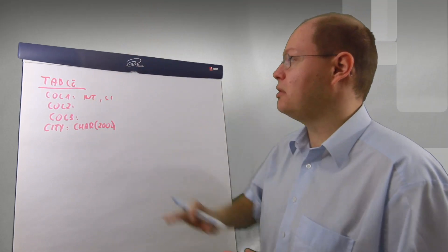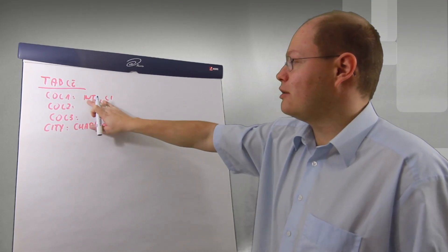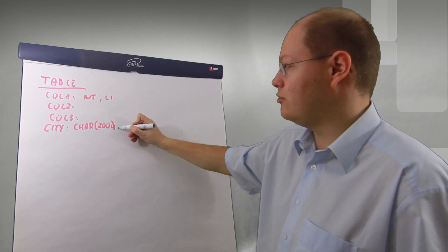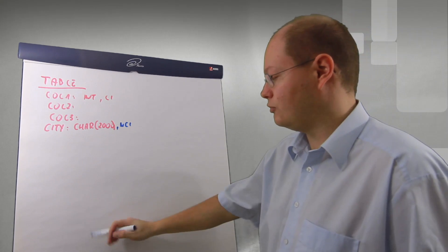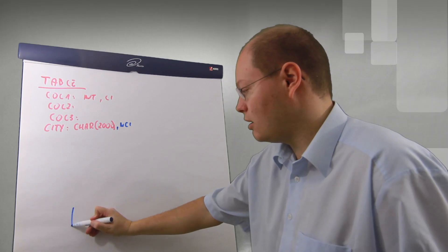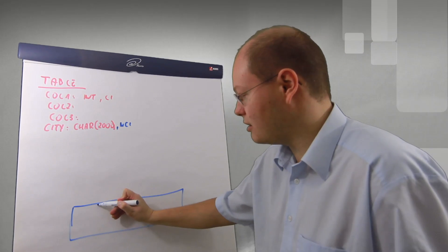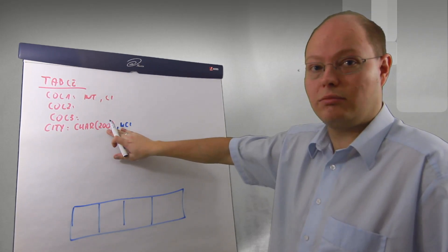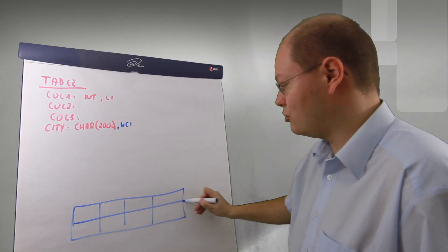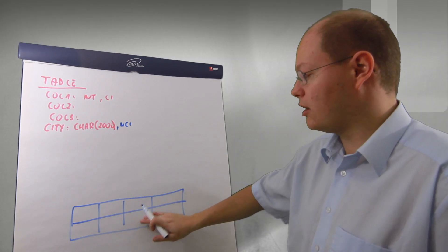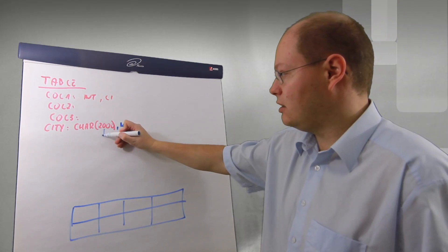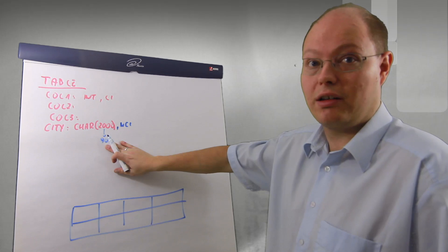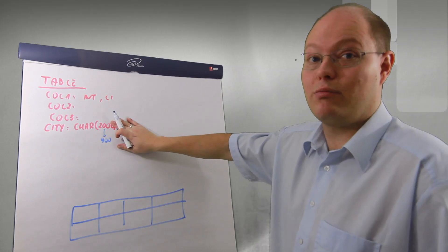Imagine we have a simple table definition — we have a first column of integer data type, we have defined a clustered index on it, and on some column like a city column we create a non-clustered index. In the first step SQL Server creates the leaf level of our non-clustered index. We have here a varchar(2000) column — a simple one means we can store two records on one page in the leaf level. In reality SQL Server only allows a maximum key length of 900 bytes or 16 columns when dealing with a composite key.